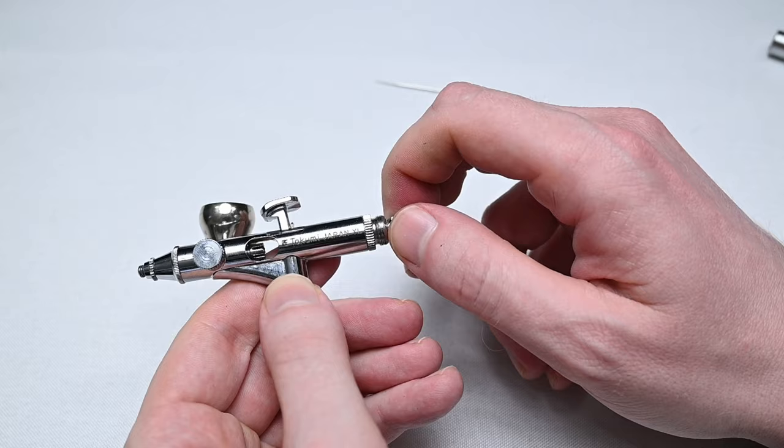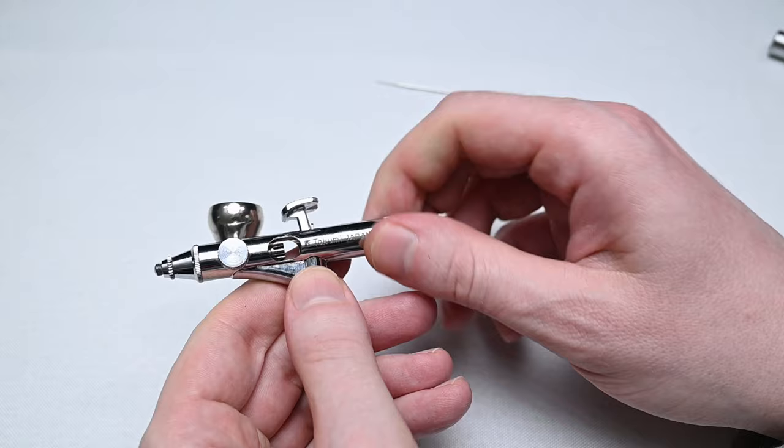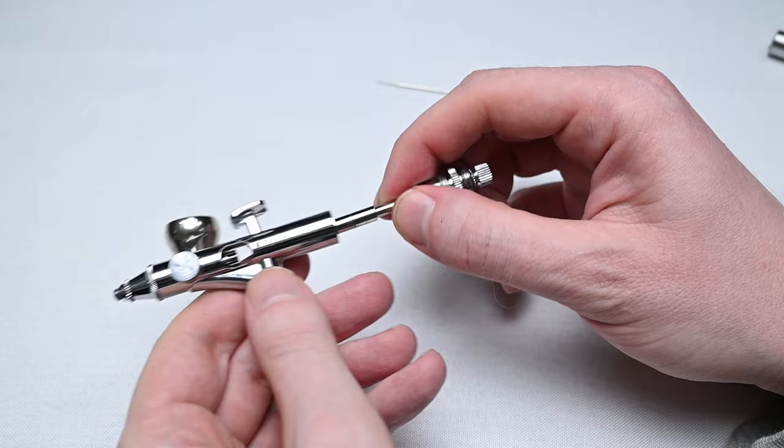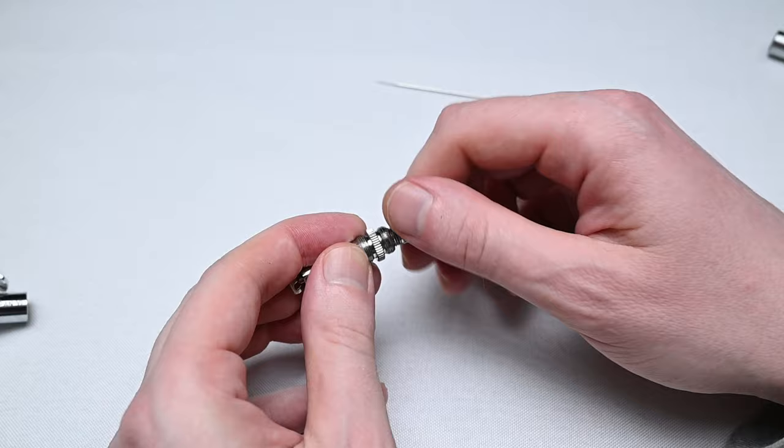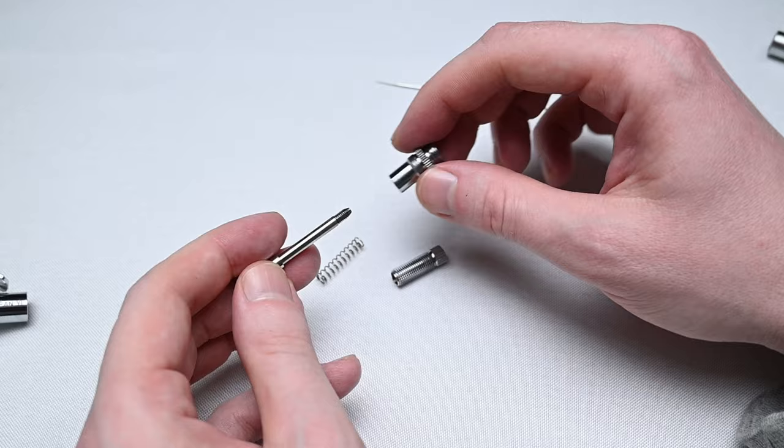So from here, I can unscrew this large part. This is called the spring guide, which acts as the housing for the entire rear spring assembly. And when I unscrew that, the spring assembly comes right out of the back of the airbrush. From here, I'm unscrewing that needle spring adjuster, and inside here, you're going to see the needle spring itself. This spring is over this long part, which is called the needle chucking guide, and at the front of it, you'll see that trigger lever. And that's it for the rear assembly. It just consists of these four parts. Very easy to break down.